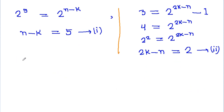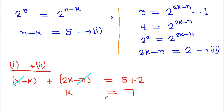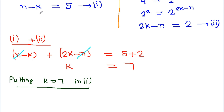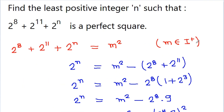Now subtracting equation 2 from equation 1: (n minus k) minus (2k minus n) equals 5 minus 2. The n terms cancel and we get 3k minus 2k... simplifying we get k equals 7. Putting k equals 7 into equation 1: n minus 7 equals 5, so the value of n will be 12. So from the first method we get n equals 12.